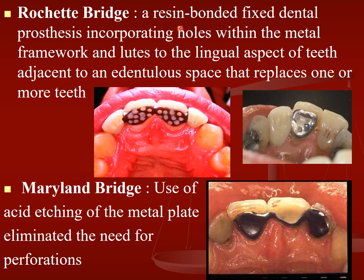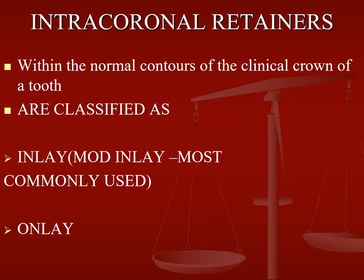Rochette's bridge is a resin bonded fixed dental prosthesis incorporating holes within the metal framework, and is luted to the lingual aspect of teeth adjacent to an edentulous space, that replaces one or more teeth. Maryland bridge uses acid etching of the metal plate — you use a metal plate which can be acid etched and then cement is placed, and it can be used as a Maryland bridge.